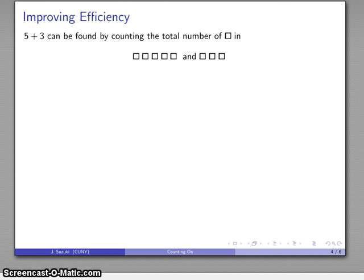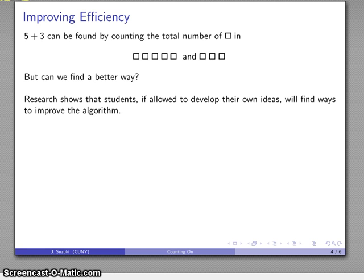Now we might ask ourselves, can we do this more efficiently? This is the heart of all algorithms—how can we improve our process? The obvious thing to do is count everything here because that is what the sum means. On the other hand, can we find a better way? Again, research shows that students, if they're allowed to develop their own ideas and work with it, they will find ways of improving the algorithm. They will hit upon important insights rather than counting every single one of these.